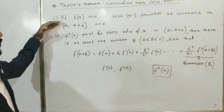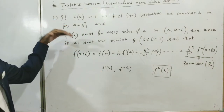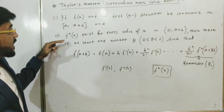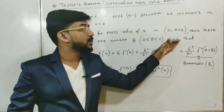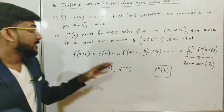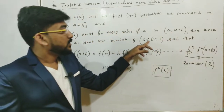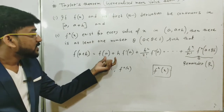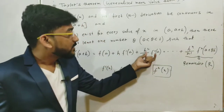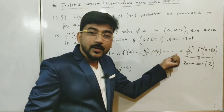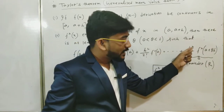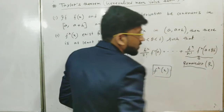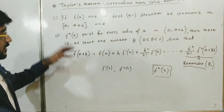So these two criteria — that f(x) and its first n−1 derivatives are continuous on the closed interval [a, a+h], and that f⁽ⁿ⁾(x) exists for every x in the open interval (a, a+h) — guarantee there exists at least one number θ, where 0 < θ < 1, such that f(a+h) = f(a) + h·f′(a) + (h²/2!)·f″(a) + (h³/3!)·f‴(a) + … + (hⁿ/n!)·f⁽ⁿ⁾(a+θh). That last term is sometimes called the remainder. This is Taylor's theorem.